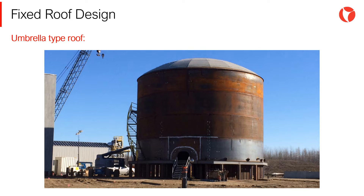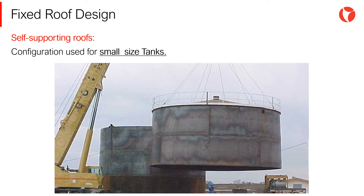On the circumferential axis, the umbrella type roof is similar to the cone type roof. Self-supporting roofs consist of a set of overlapped or butt-welded plates. Because of their physical shape, they are capable of supporting themselves without any structural element, and are supported at the outer part of the roof by the tank shell. The thickness of the roof plates must be calculated and designed so that the roof can be self-supported.